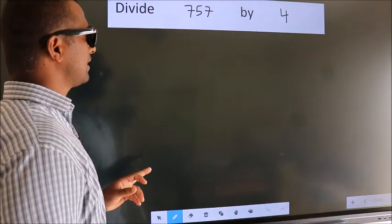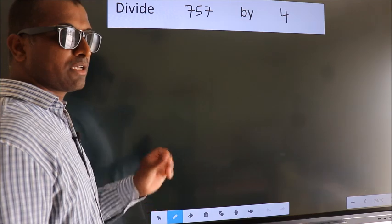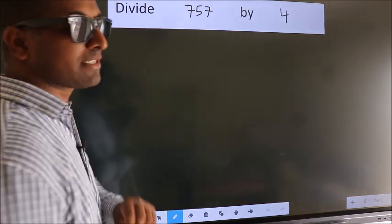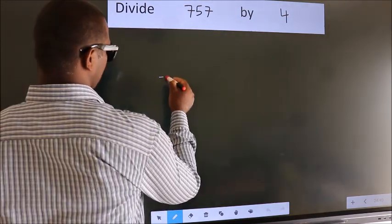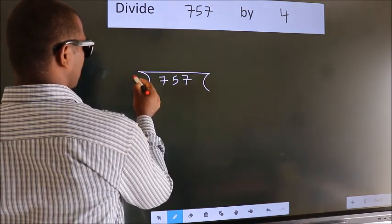Divide 757 by 4. To do this division, we should frame it in this way: 757 here, 4 here.